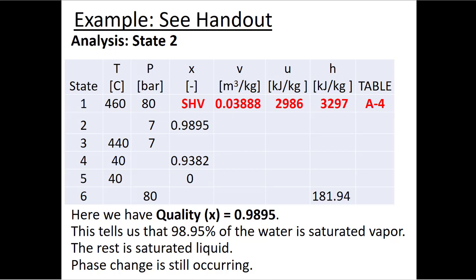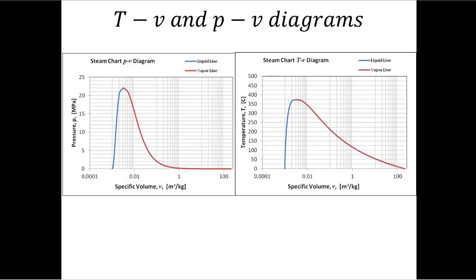Before moving to state two, I want to plot state one on my PV and TV diagrams. On the PV diagram I know the pressure and the specific volume, so I find those two lines on the graph and place a point — that's state one. I know the temperature and the specific volume as well, so I can plot state one on the TV diagram too.